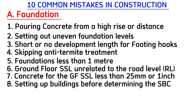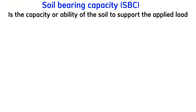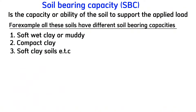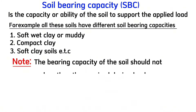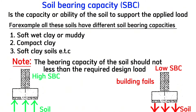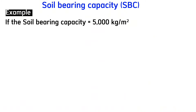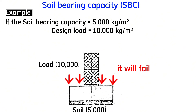Common mistake number eight is setting up high-rise buildings before determining the soil bearing capacity. Bearing capacity of the soil is the capacity of the soil to support the applied load. Different soils have different bearing capacities — for example, soft wet clay, muddy soils, and compact clay soils all differ. The bearing capacity of soil should not be less than the required design load, because it will fail after some time due to settlement. For example, if the soil bearing capacity is 5,000 kilograms per meter squared and the design load is 10,000 kilograms per meter squared, the building will fail because the design load is higher than the soil bearing capacity.